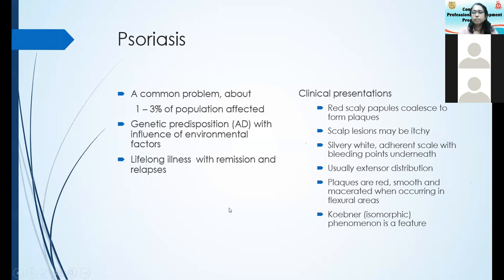Usually psoriasis is an extensor disease, but there can be flexor involvement as well. Rather than looking at descriptions, we will move on to the pictures. Remember, psoriasis is one condition where the Koebner phenomenon is seen — that is, the occurrence of lesions in areas where trauma occurs.